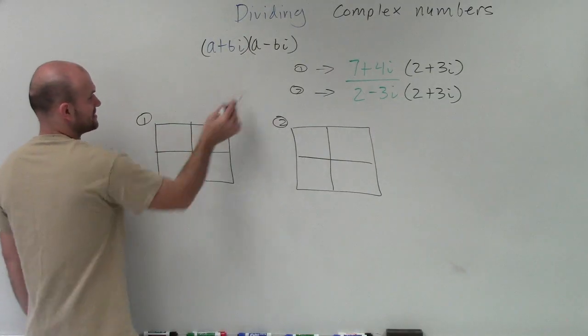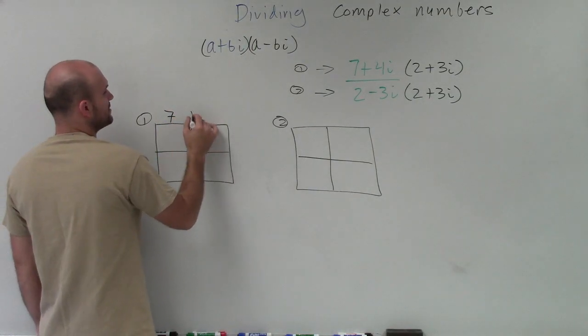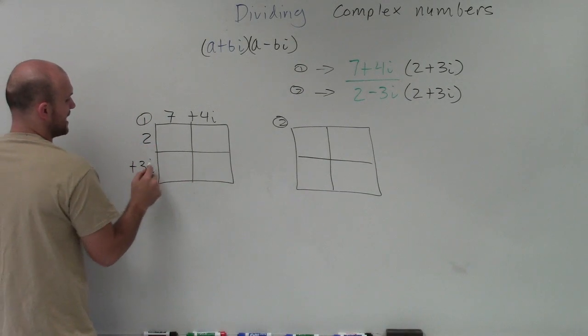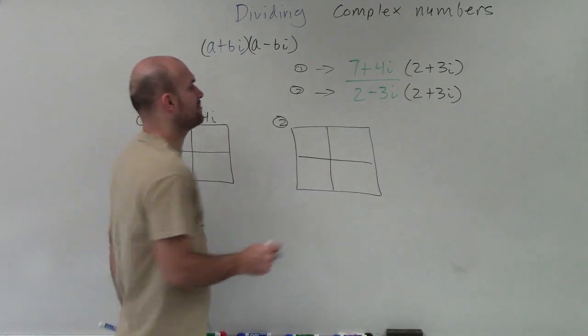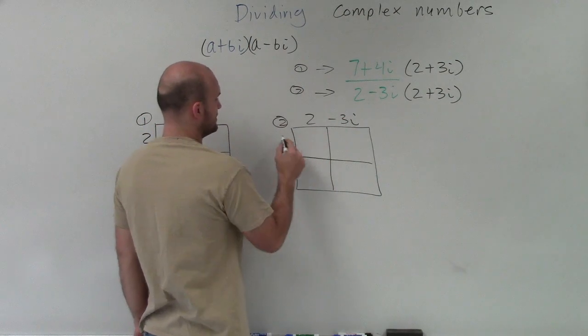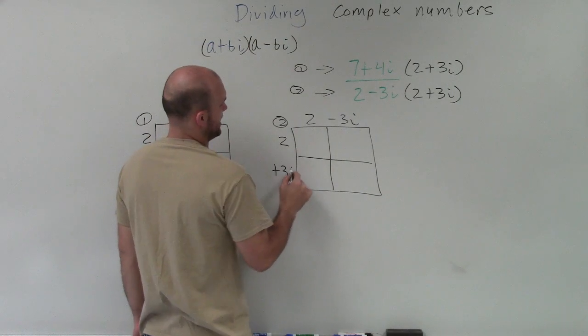So that's going to look like this. So the numerator is going to be 7 plus 4i, and then it'll be 2 plus 3i. Where over here, my product of my denominator is going to be 2 minus 3i times 2 plus 3i.